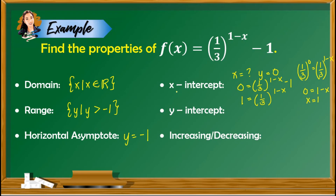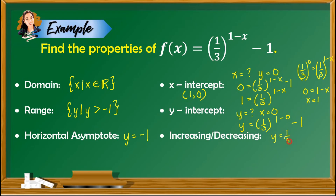So the x-intercept is given by (1, 0). For the y-intercept, we find the value of y when x is 0. Plugging in 0 for x, we have y equals 1 third raised to 1 minus 0, minus 1. Since 1 minus 0 is 1, we have 1 third raised to 1, which equals 1 third, minus 1. Simplifying, we get negative 2 thirds.